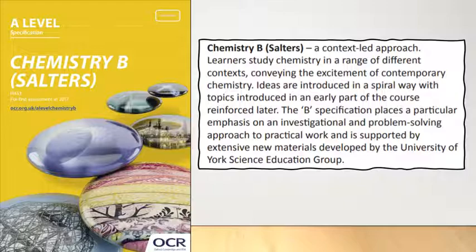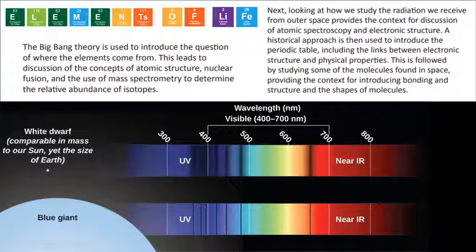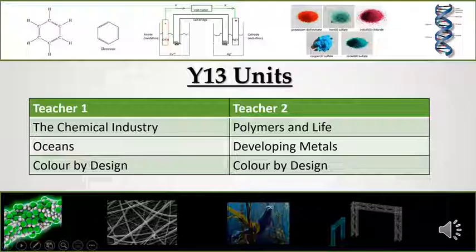For example, one of the first units at AS level is Elements of Life. You will learn about spectroscopy, which is the interaction of light and matter. We put this into context using ideas about the sun and the stars, and how scientists use the light from the sun and stars to analyse the elements that they're made up of.